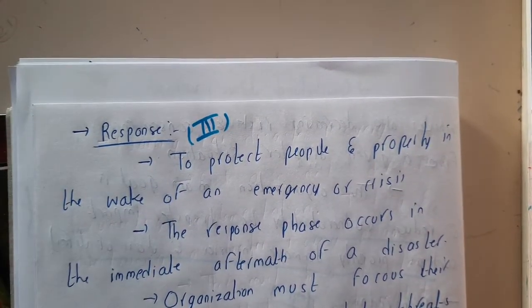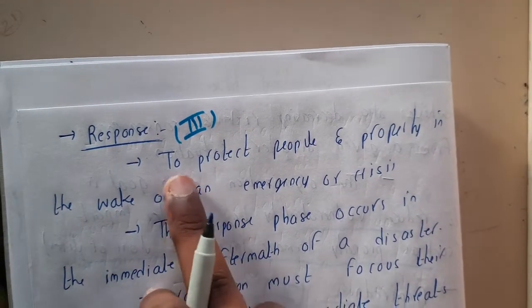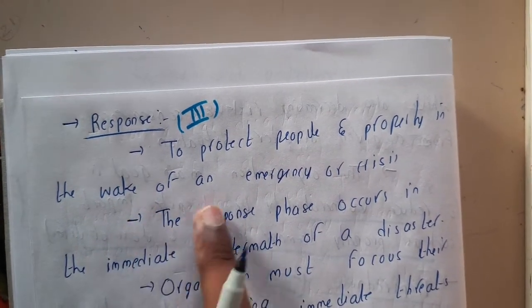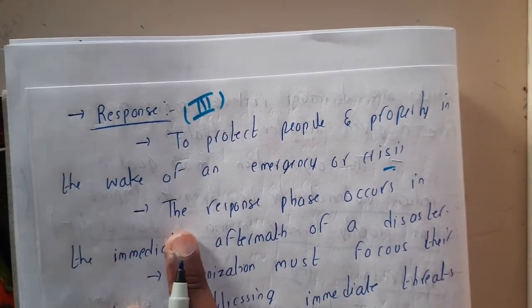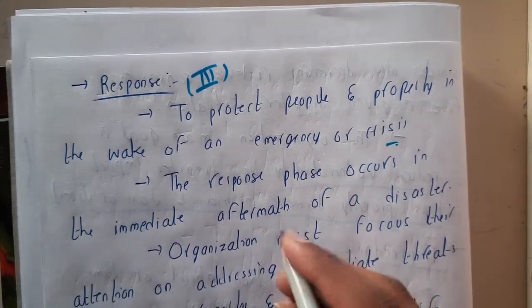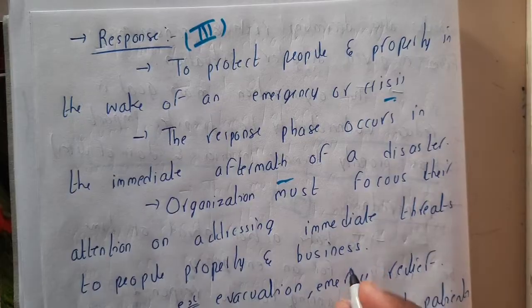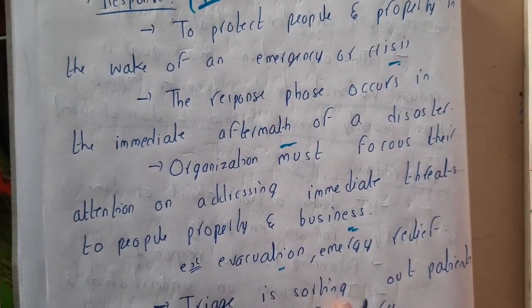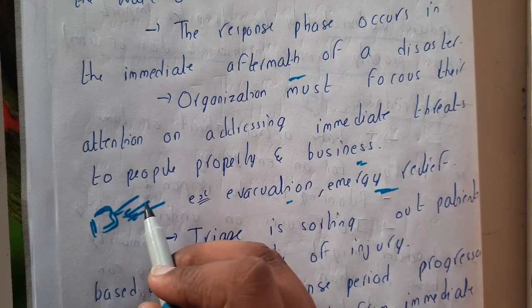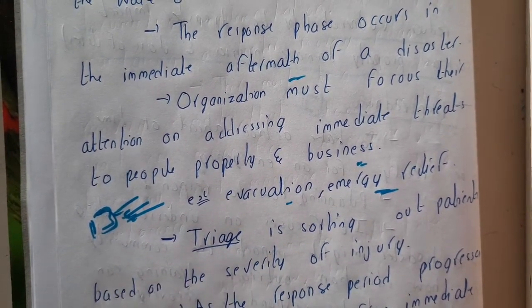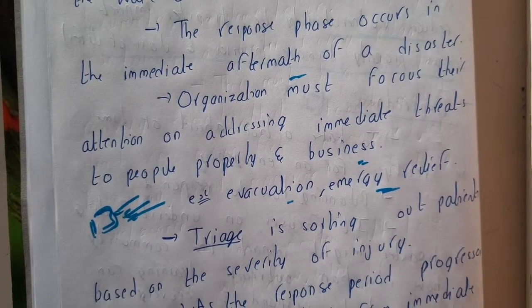The third phase is response. Once the disaster has occurred and there are effects on the surroundings, your response matters a lot. Response means to protect people and property in the wake of an emergency or crisis. The response phase occurs immediately after the disaster. Organizations must focus their attention on addressing immediate threats to people, property, and business — such as evacuation and emergency relief.